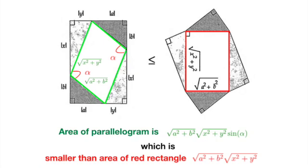Anyway, the area of our green parallelogram is less than the area of our red rectangle, which is given by square root of a square plus b square multiplied by square root of x square plus y square.